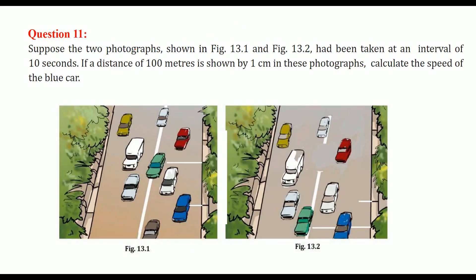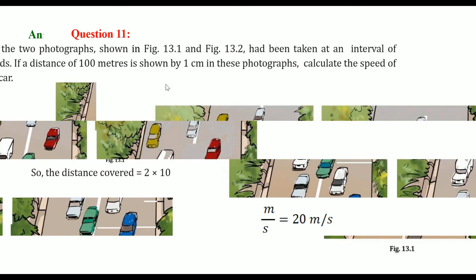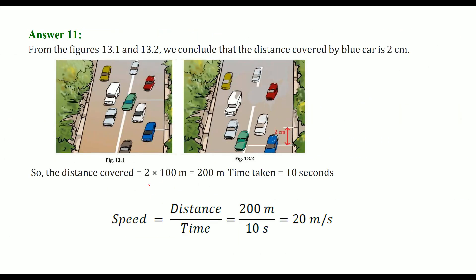Two photographs are taken at an interval of 10 seconds. If a distance of 100 meters is shown by 1 cm, and the marking shows 2 cm between positions, then the distance traveled is 2 times 100 equals 200 meters. Speed equals distance divided by time: 200 meters divided by 10 seconds equals 20 meters per second.